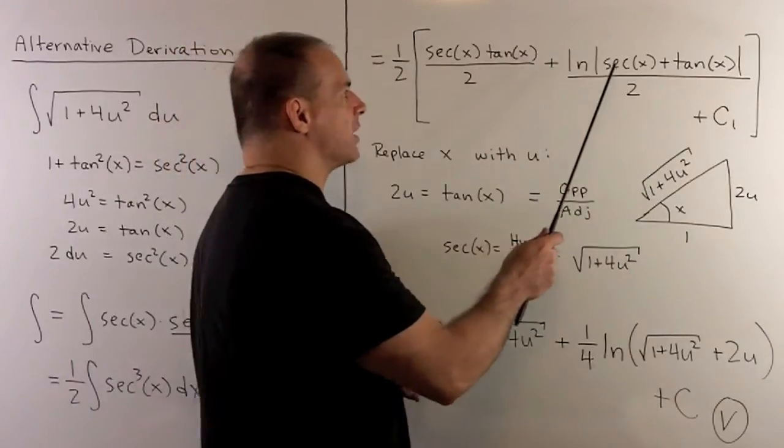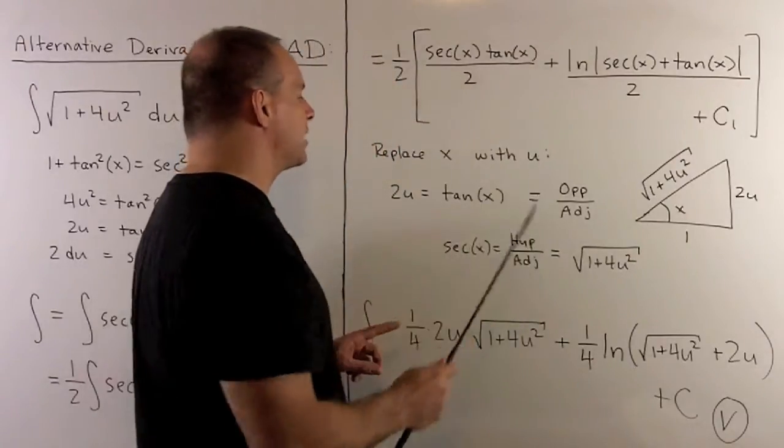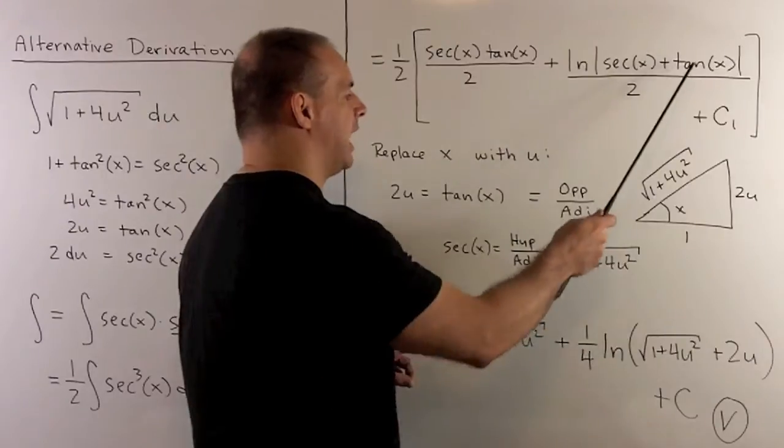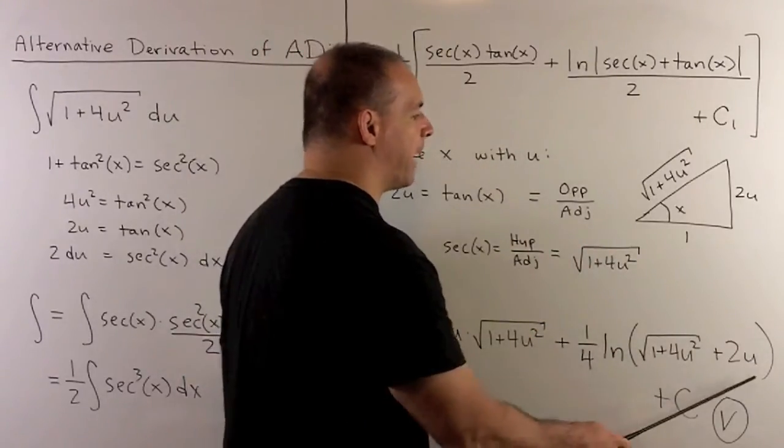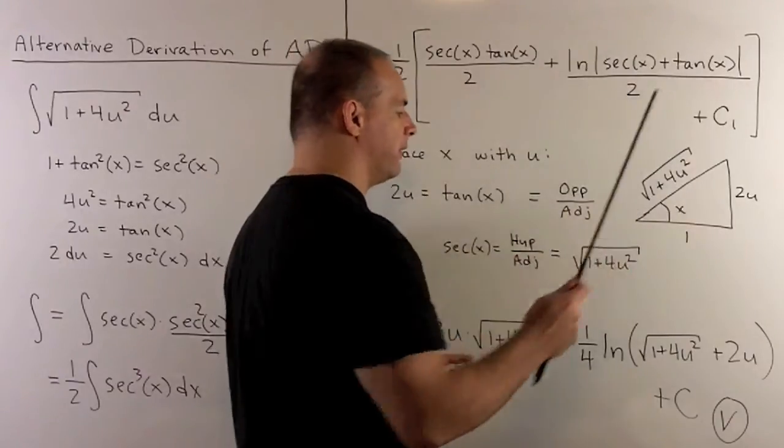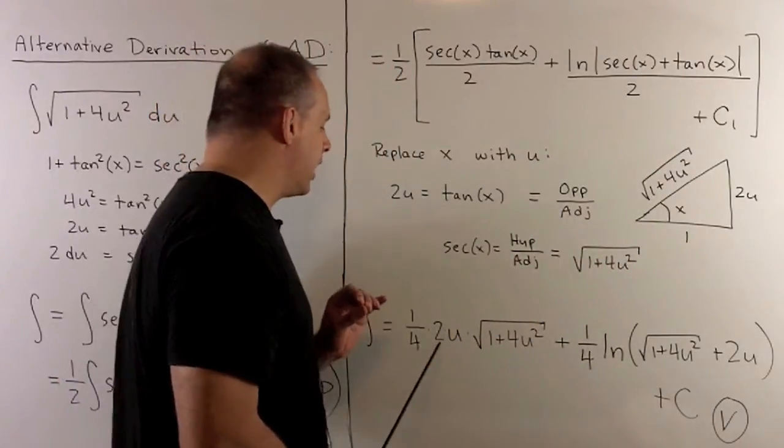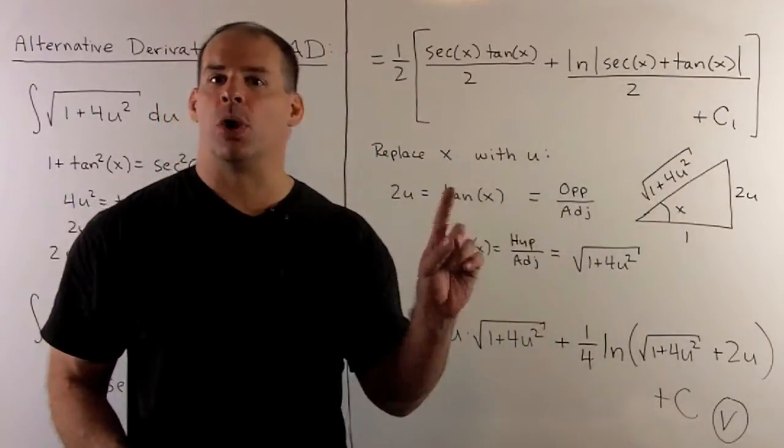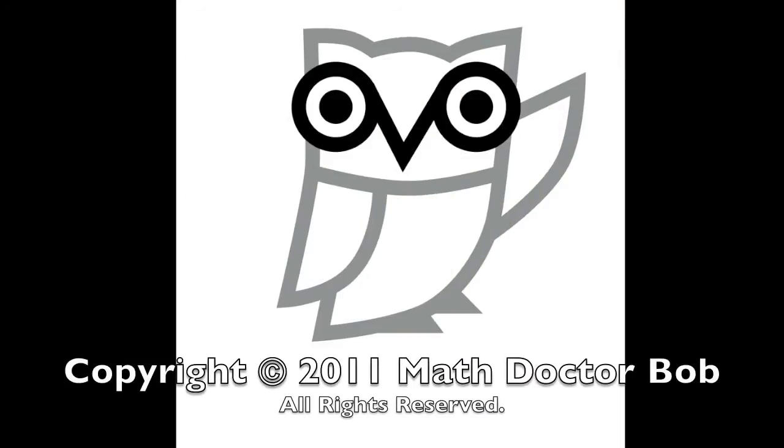For natural log of secant x plus tanx over 2, we're going to have secant x is square root of 1 plus 4u squared. Tanx is 2u. And we've already seen that this term is always going to be positive, so I can drop the absolute value signs. You'll note, this looks a lot like the expression we had on the previous board. And then that'll get us to our general formula.